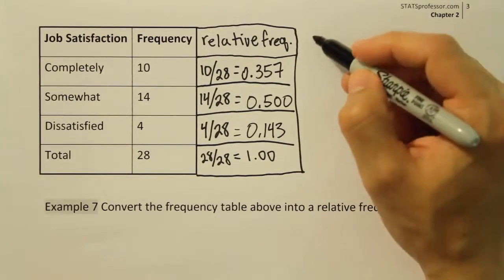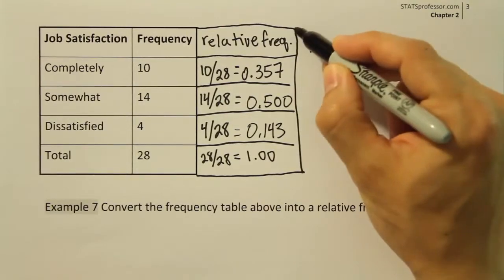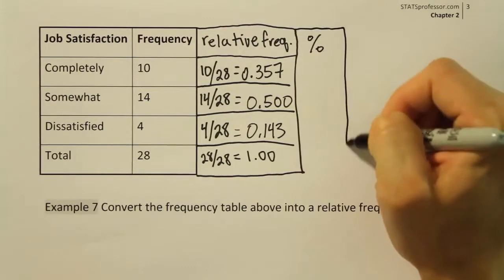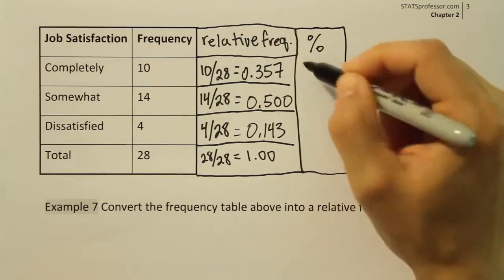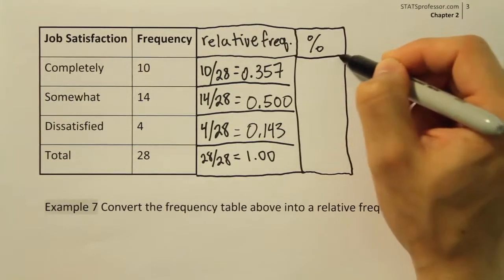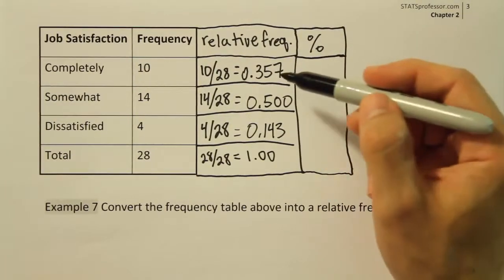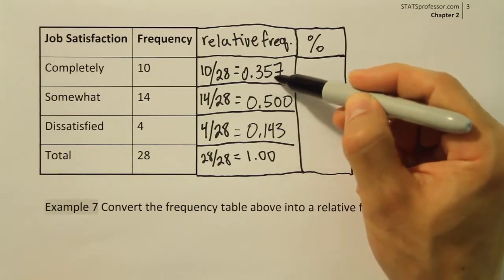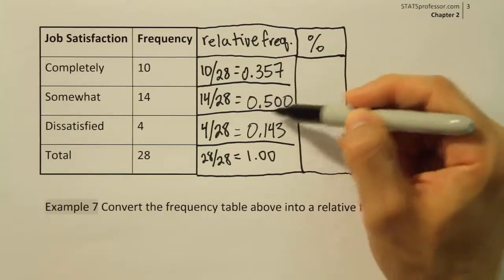And the last thing you might want to do is come up with the percentages. This is something nice that we like to have, so we might as well do that while we're creating this relative frequency table. We'll come up with the class percentages. All you have to do to do that is move the decimal place over twice. In other words, multiply each of these by 100, right?